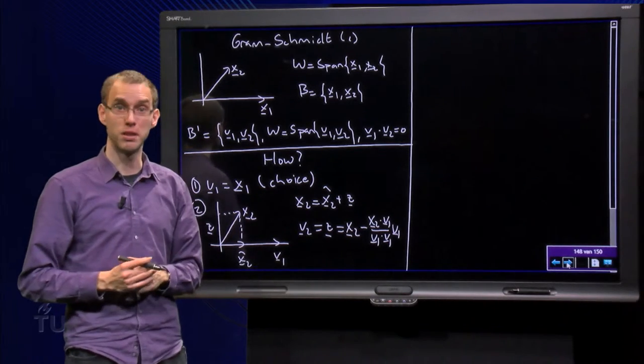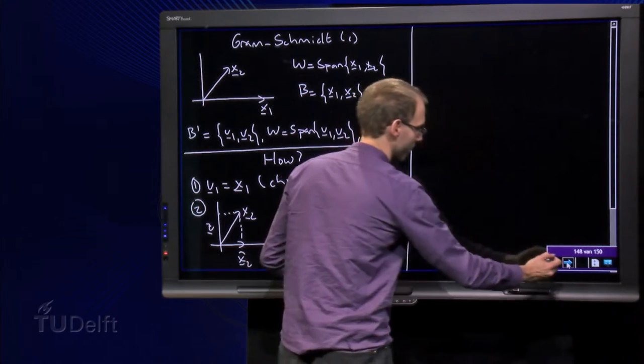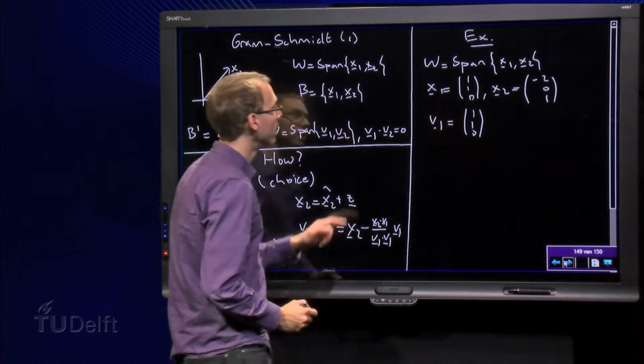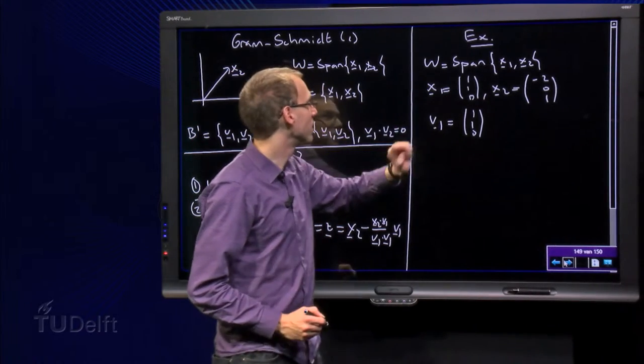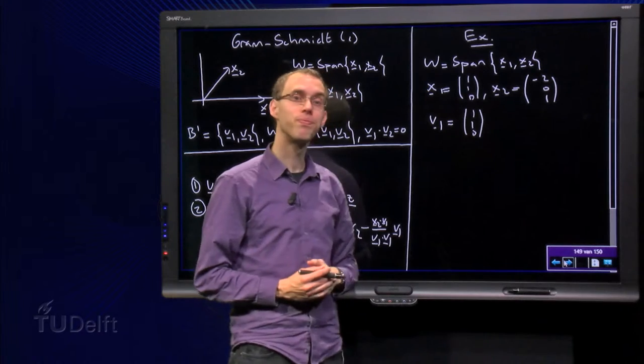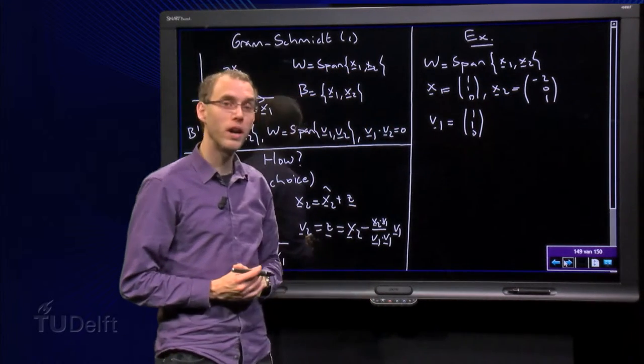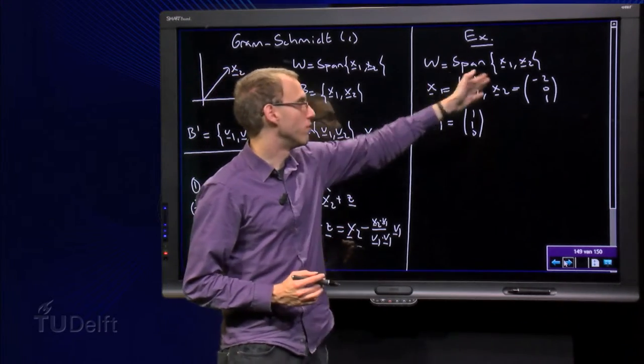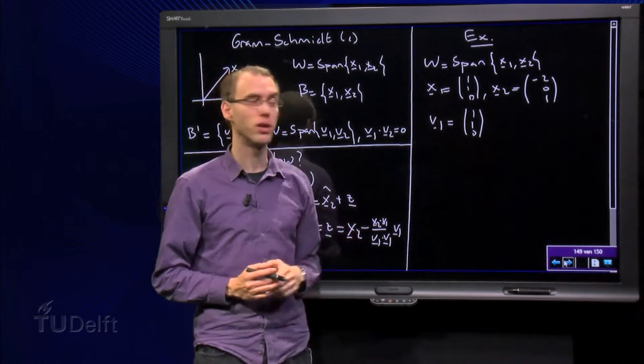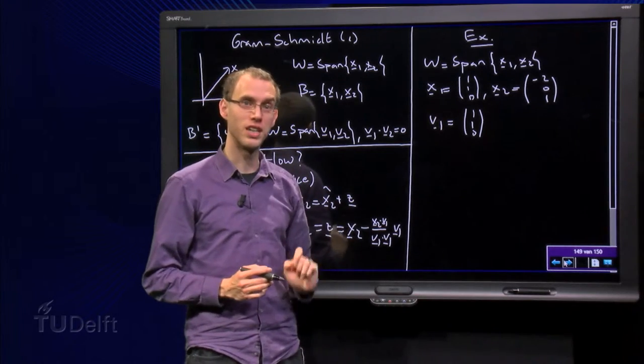Let's do that with an explicit example. So, I have the span of two vectors, x1 and x2, x1 is (1, 1, 0), x2 is (-2, 0, 1), and I can choose one of the two as my v1, so let's pick the first one for example, v1 equals (1, 1, 0).